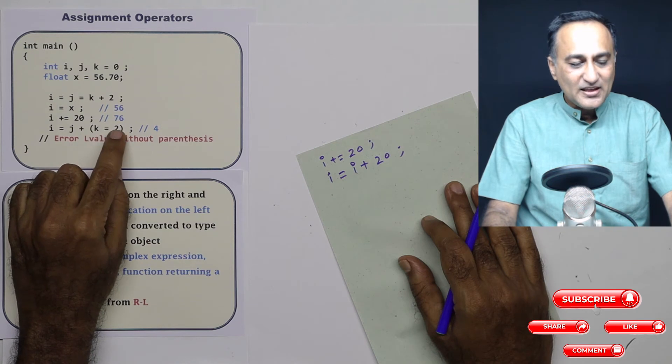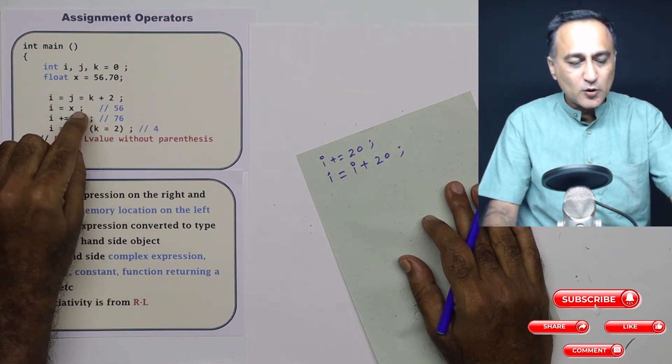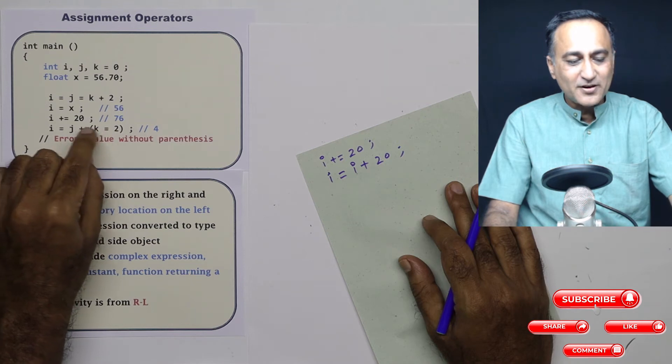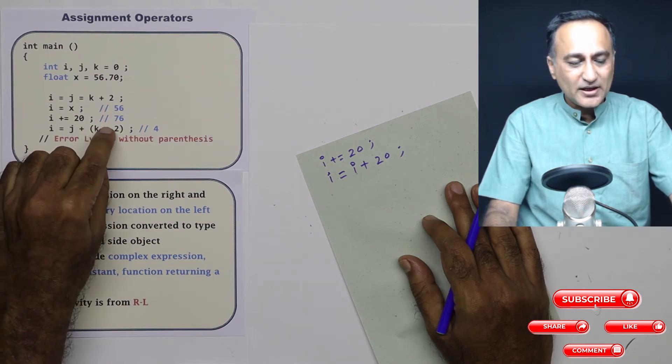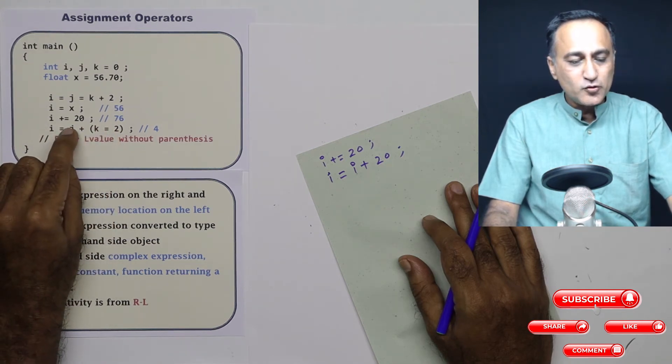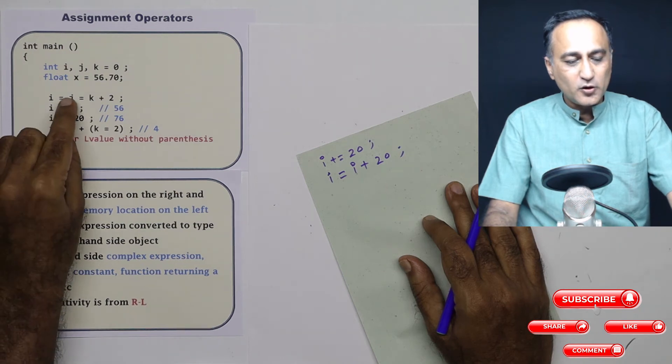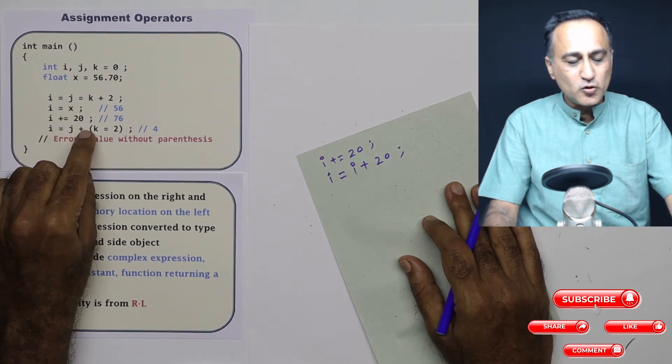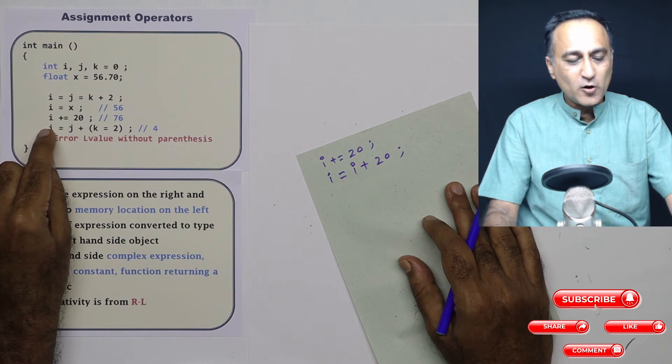And then in the bracket, a value 2 jumps out as a side effect of this assignment. So that 2 gets added to j. j was 2 here, so 2 plus 2 becomes 4. So i now becomes 4.